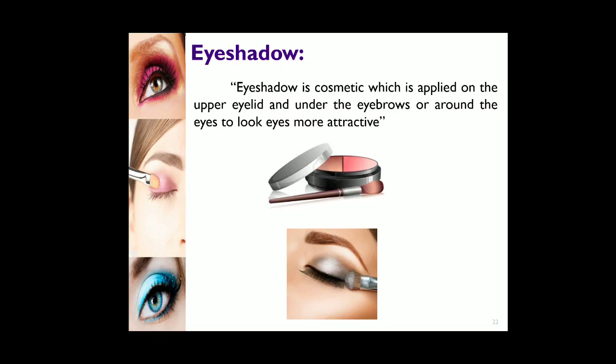Dear students, welcome to the second lecture of eye cosmetics. In this lecture we are going to study eye shadows. Eye shadow is a cosmetic which is applied on the upper eyelid, under the eyebrows, and around the eyes to make the eyes look more attractive. That means it is applied to the area surrounding the eyes.